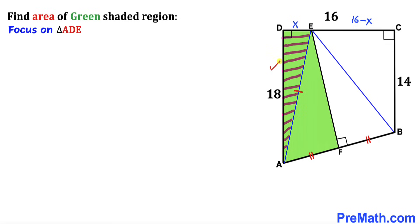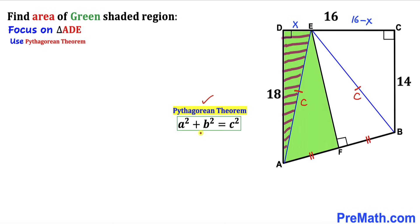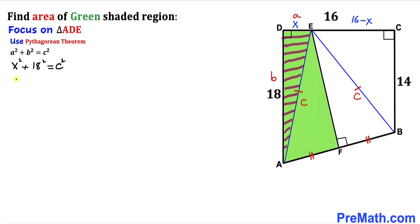Let's focus on right triangle ADE and apply the Pythagorean theorem: a² + b² = c². Here, a is x and b is 18, giving us x² + 18² = c², which simplifies to x² + 324 = c². Let's call this Equation 1.